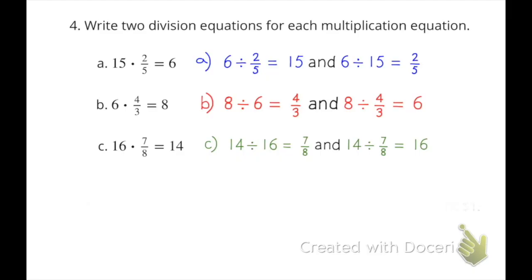Part C. Sixteen times seven-eighths equals fourteen. That could be written as fourteen divided by sixteen equals seven-eighths and fourteen divided by seven-eighths equals sixteen.